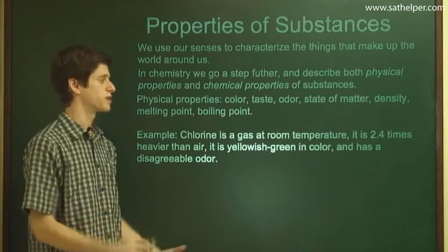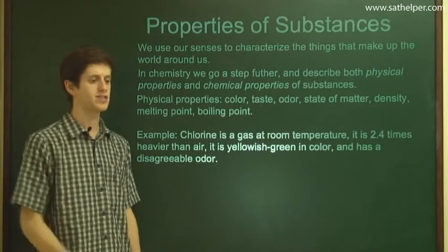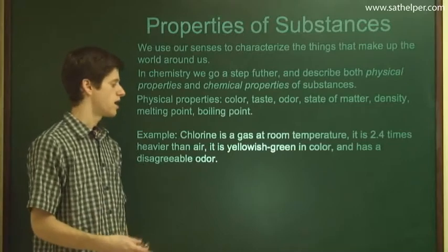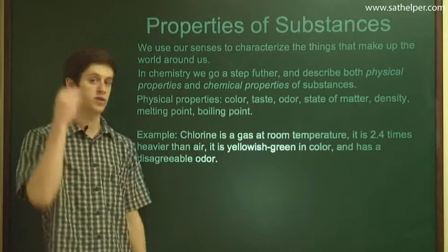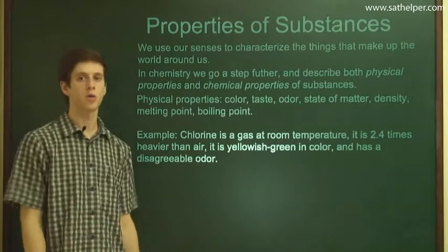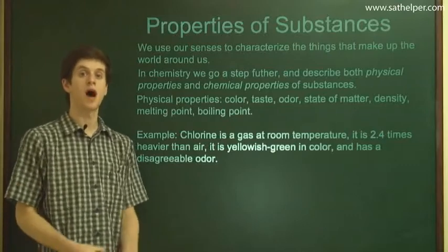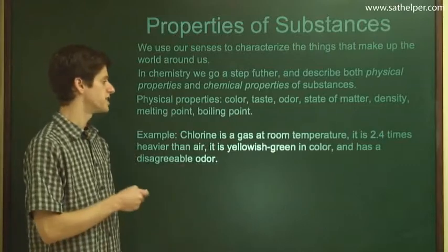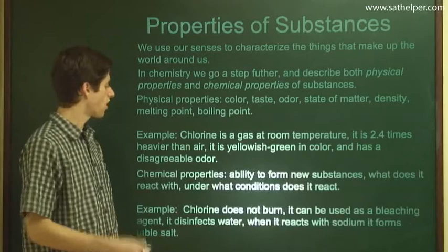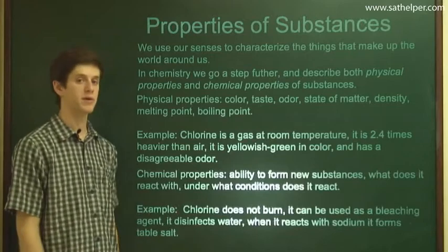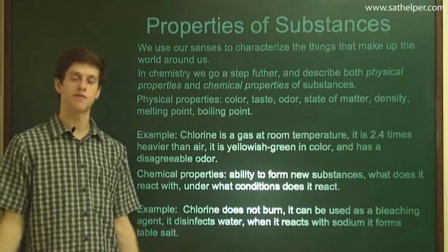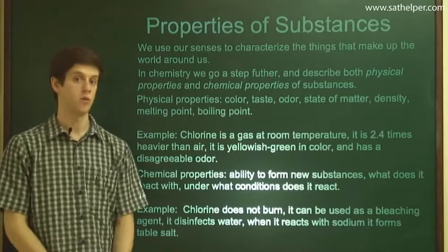For example, chlorine is a gas at room temperature. It is 2.4 times heavier than air, yellowish-green in color, and has a disagreeable odor. These are things we can perceive or measure about chlorine by itself. If you have a bottle of chlorine, you can measure these properties, and they will be the same for chlorine anywhere in the world. Chemical properties, combined with physical properties, truly define everything there is to know about a substance.